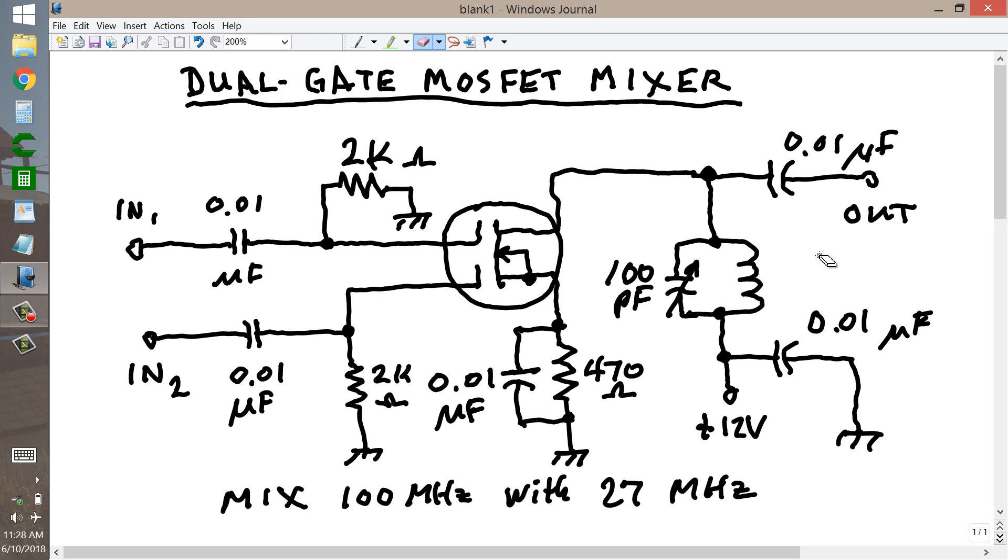I am going to describe for you a mixer circuit using a dual-gate metal oxide semiconductor field-effect transistor for mixing two signals, one at 100 MHz, one at 27 MHz. Someone emailed me and said, is it okay to use an operational amplifier for a circuit like this? And I responded to him,